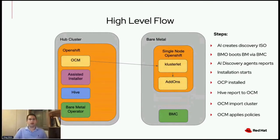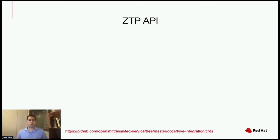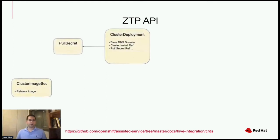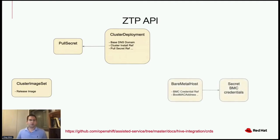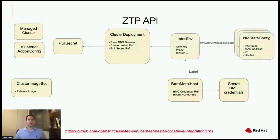Let's look more closely at the APIs and CRDs used for the ZTP flow. ClusterDeployment and ClusterImageSet came from Hive; ClusterDeployment was enhanced to enable plugging an external installer, keeping the existing OCM interface. BareMetalHost comes from the Metal3 project, and ManagedCluster and ClusterletAddonConfig came from Open Cluster Management. The InfraEnv and NMStateConfig are resources needed to create a discovery image, linked via label selector. They contain network configurations such as static IPs. Users may configure InfraEnv with an SSH key to debug the host during the discovery phase.